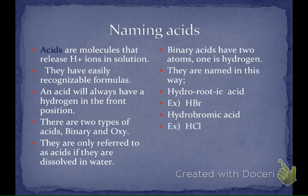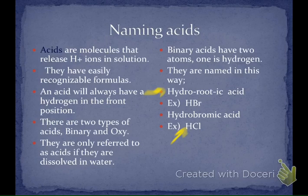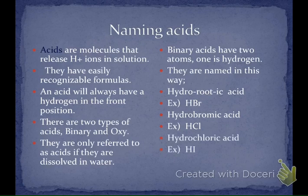Here's the next one — this is also a binary acid. Again, I know it's an acid because hydrogen is in the first position. I know it's binary because there are only two elements: hydrogen and chlorine. So using this method: hydro, the root here is chlorine, so hydrochloric acid. Same thing with the next one — this is hydroiodic acid because it's hydrogen and iodine.